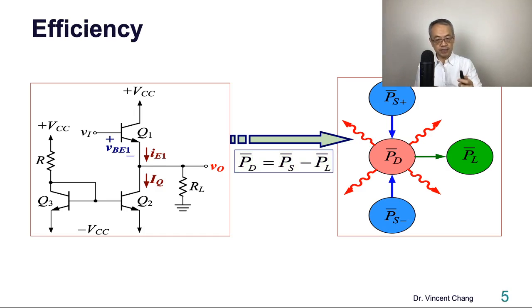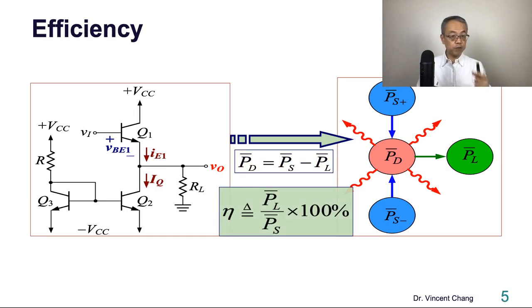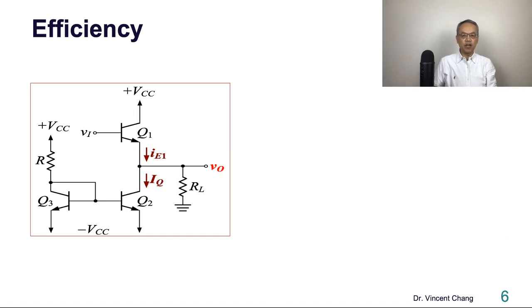Here comes the efficiency. The definition of the efficiency is how much percentage come from the supply got delivered to the load. So load power on the top and the bottom, the denominator is the supply power. So load power time-average divided by supply power and times 100 percent is the definition of the efficiency of amplifier stage.